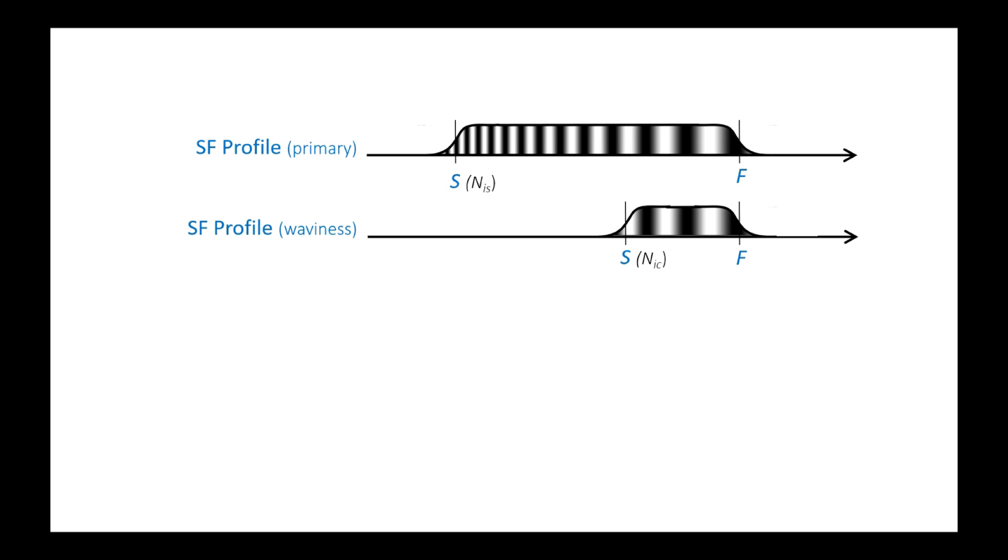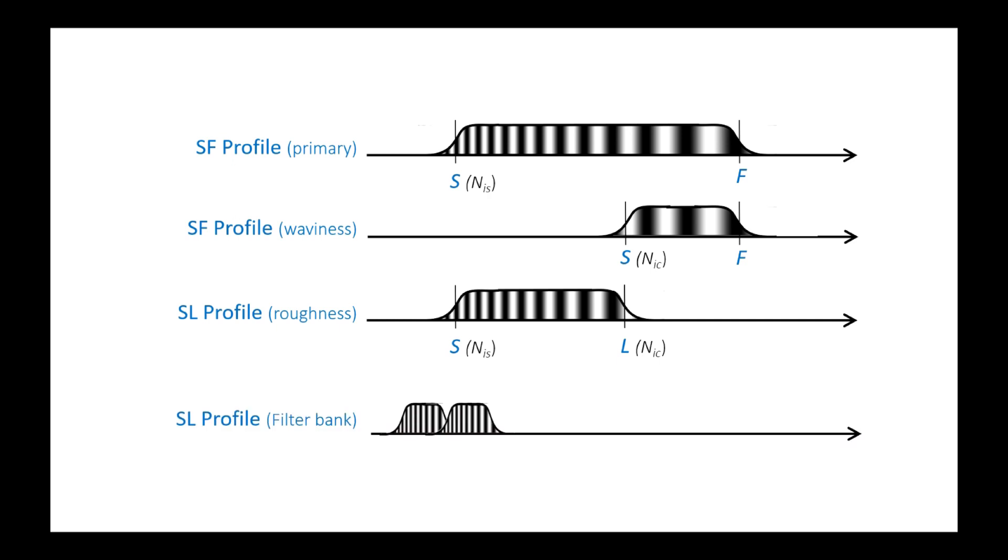In the case of an SL profile, equivalent to a roughness profile, the cutoff of the S filter will be small, NIS, equivalent to Lambda S, and the cutoff of the L filter will be NIC, equivalent to Lambda C. It is also possible to create a bank of band pass filters, by taking cutoff values NIS and NIC that are fairly close, or even identical, and filter the profile at several narrow bands, in order to carry out a multi-scale exploration.